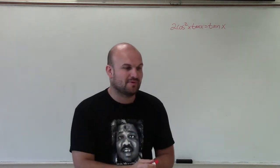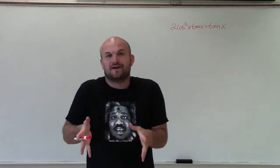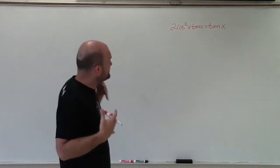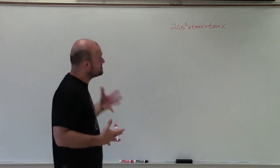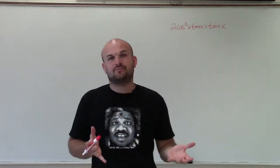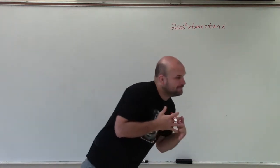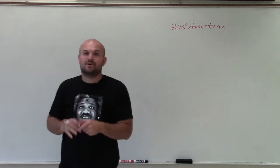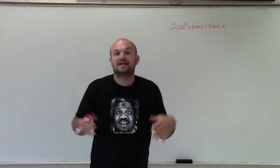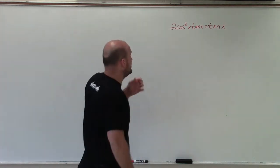To do a problem like this, we first need to get all of our variables onto the same side. We have two functions — cosine and tangent — and they do not relate to each other by the Pythagorean identities. So the best approach is to apply the zero product property and set them up into two separate equations to solve.